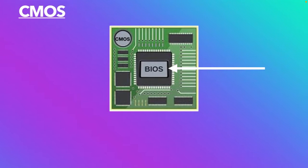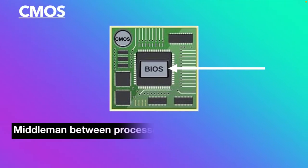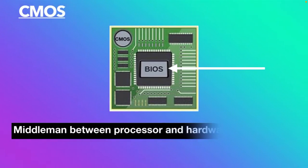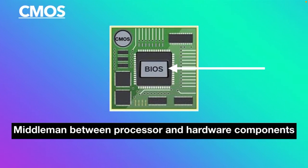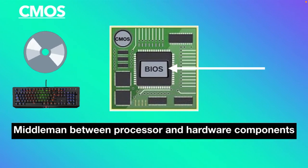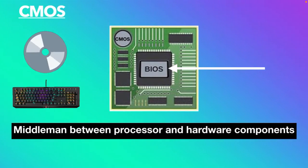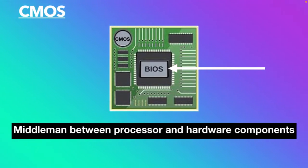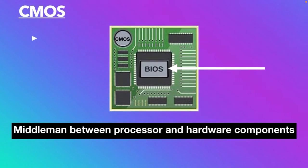BIOS is a computer chip on the motherboard, like CMOS, except that its purpose is to act like a middleman between the processor and other hardware components like hard drive, keyboard, USB ports, and so on. A computer without a BIOS doesn't understand how these components work together. For more information on BIOS, click on the link below in the description.